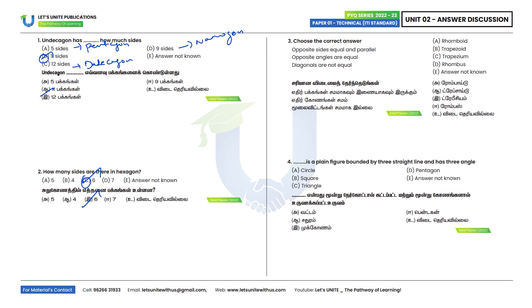Third question: Choose the correct answer. Opposite sides are equal and parallel, opposite angles are equal, and diagonals are not equal. We can say this describes a rhomboid. The correct answer is rhomboid, also known as a parallelogram.